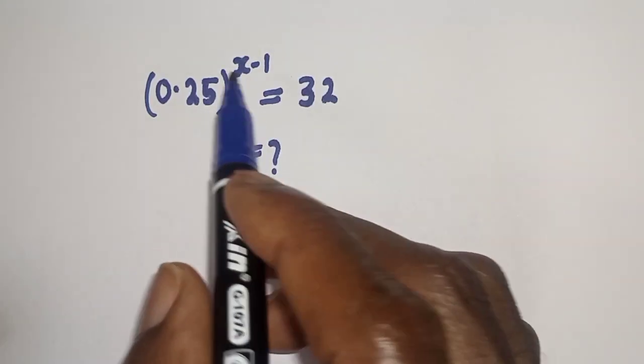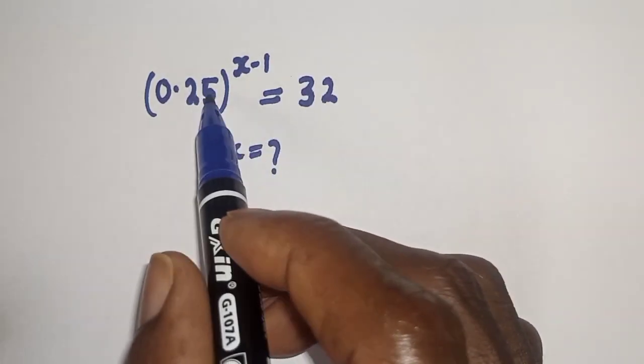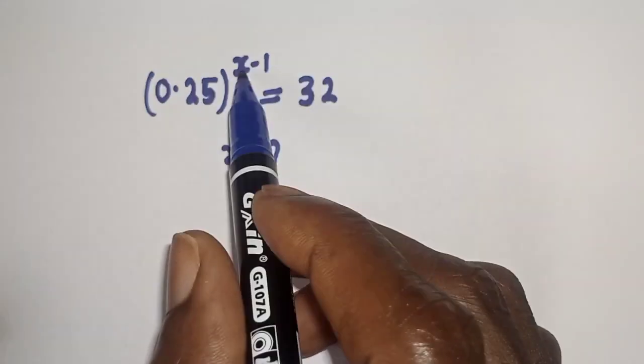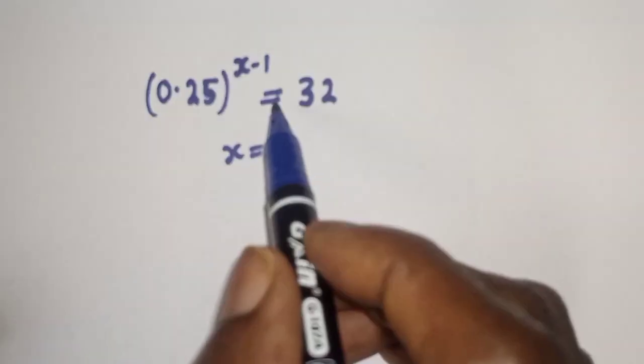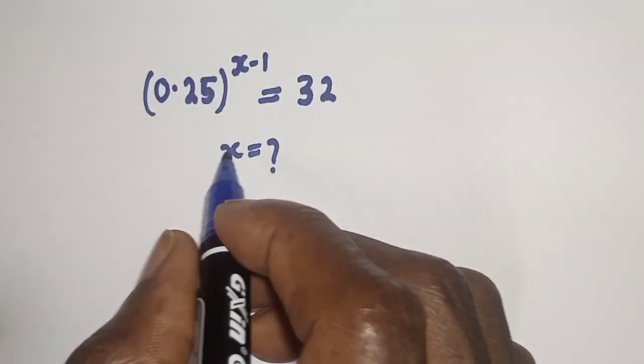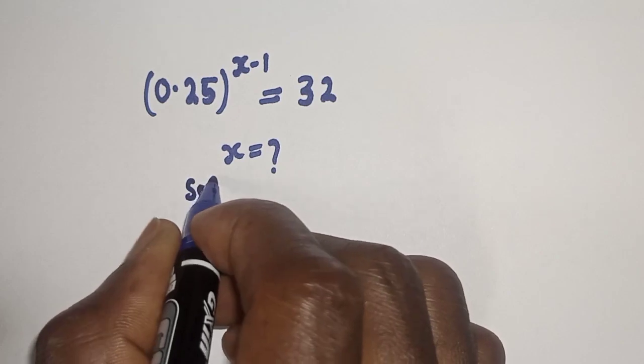Hello, welcome to Magis. In this class, we want to find the value of s from this equation: 0.25 to the power of s minus 1 is equal to 32. Like, share, comment, and subscribe. Solution: